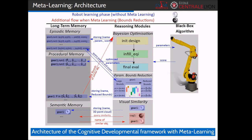You can see here the whole cognitive architecture and data flow between components, in particular the exchange between the long-term memory, composed by the episodic, procedural and semantic memory, and the reasoning modules, namely the Bayesian optimization, the parameters bound reduction, and the visual similarity.